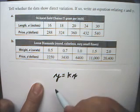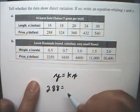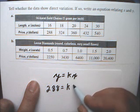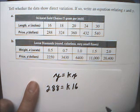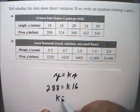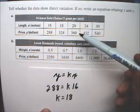So here we have 288 equals k times 16. We would have to solve this equation, and if we do, you get k equals 18. And we would have to do that for each pair.